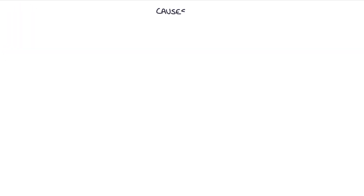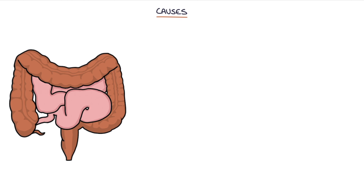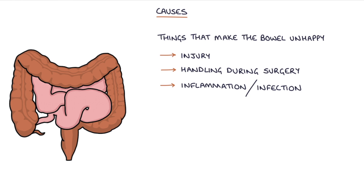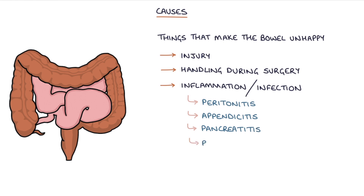There's a long list of things that can make the bowel unhappy leading to an Ileus. Common causes are injury to the bowel, handling of the bowel during surgery, particularly open surgery, inflammation or infection in or nearby to the bowel — for example, peritonitis, appendicitis, pancreatitis or pneumonia.